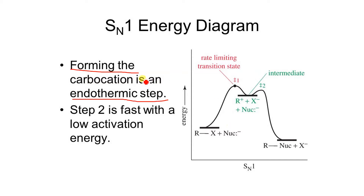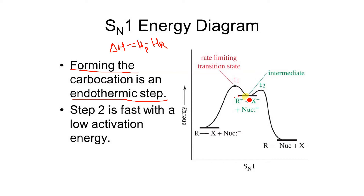The forming of carbocation is an endothermic step, so delta H = Hp minus Hr. Here we can see that the product energy (carbocation intermediate) is greater than the reactant energy, so Hp is greater than Hr, giving a positive delta H — meaning it is an endothermic step.